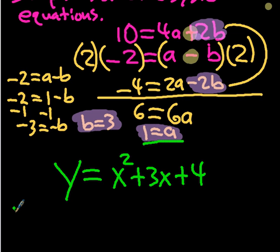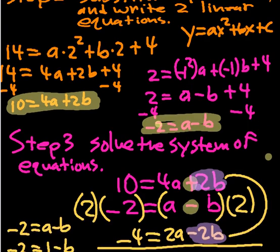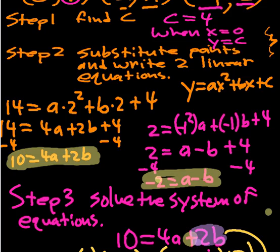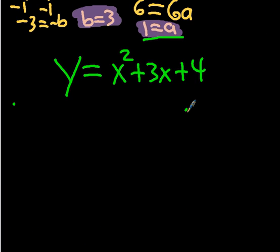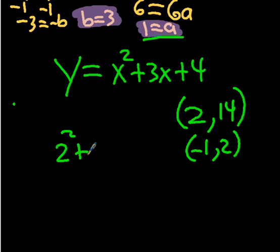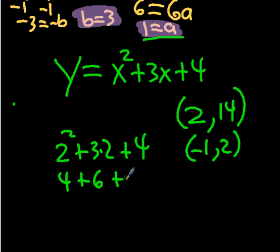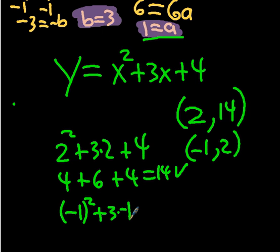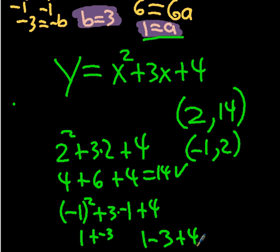You can check against the original points, which were (2, 14) and (-1, 2). For x equals 2: 2 squared plus 3 times 2 plus 4 equals 4 plus 6 plus 4 equals 14. That works. For x equals negative 1: negative 1 squared plus 3 times negative 1 plus 4 equals 1 minus 3 plus 4 equals 2. That works too, so we're good.